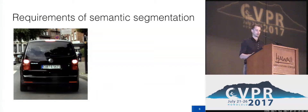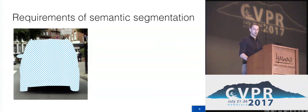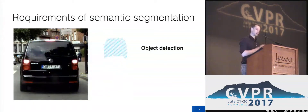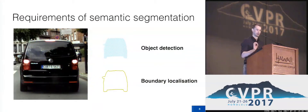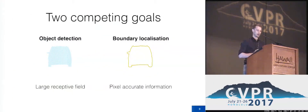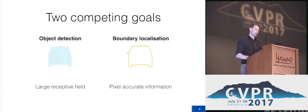If we have an image and want to do semantic segmentation, there are two tasks we're trying to achieve simultaneously. One is object detection — meaning identifying that in this area of the image there's a car. The other task is boundary localization — determining that this precise pixel is a car and the pixel next to it is street. These two goals are competing: good object detection requires a large receptive field, usually achieved using a deep pooling hierarchy. However, reducing the spatial resolution of the features deteriorates the features needed for good boundary localization.